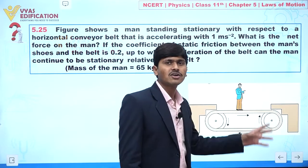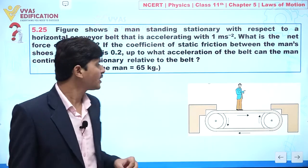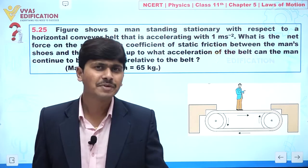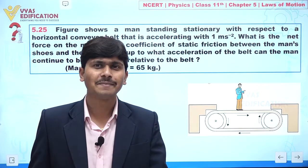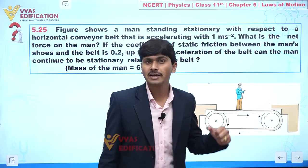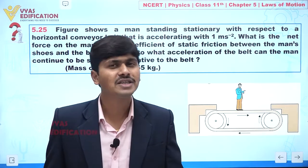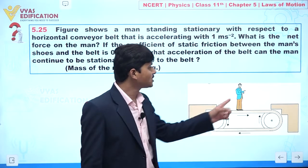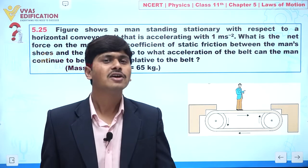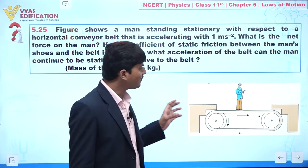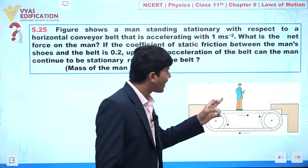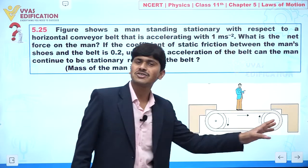Let us understand this problem. This person is standing on the conveyor belt and is stationary with respect to it. This means we are talking about a non-inertial frame — the acceleration of this person with respect to the belt. But if we talk about the acceleration of this man with respect to the ground, this person has the same acceleration as the conveyor belt. If we observe from the ground, the belt is moving with 1 meter per second square, and this person is also going with the same acceleration.